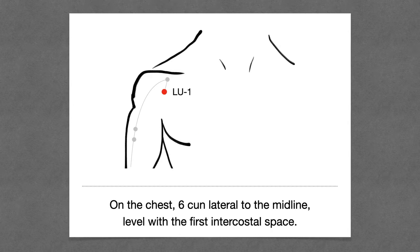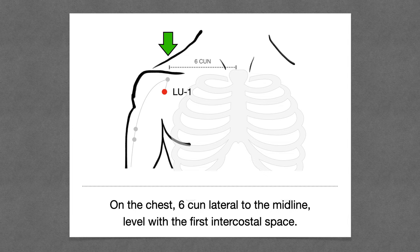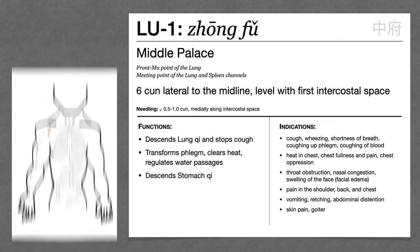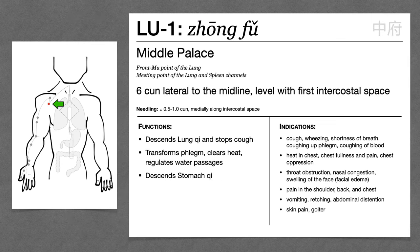Lung 1 is on the chest, six cun lateral to the midline, level with the first intercostal space. The name of Lung 1 is Zhong Fu, which means middle palace. This is reminding us that the lung channel begins in the middle jiao, and also that this point can be used to treat middle jiao issues like nausea and vomiting.